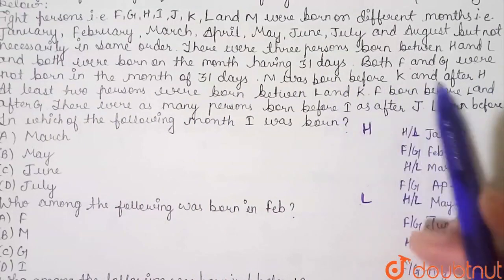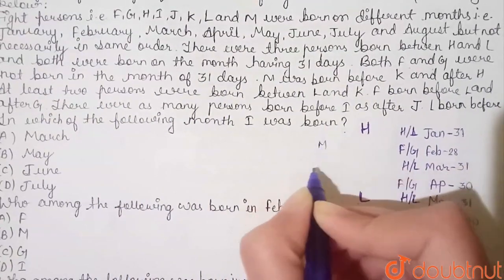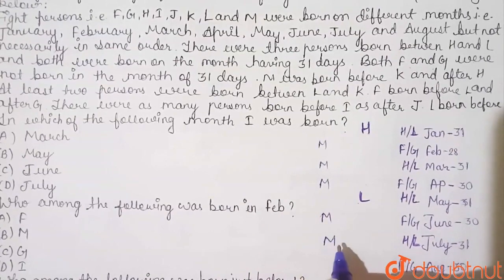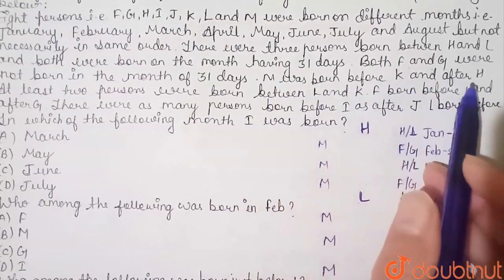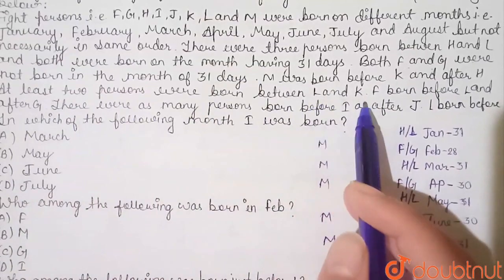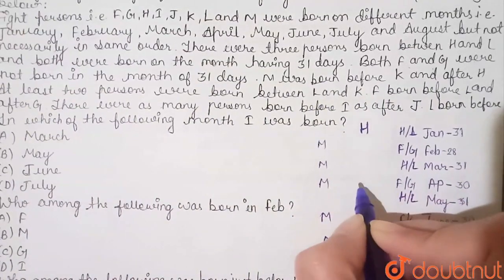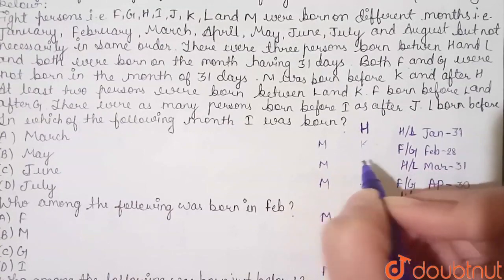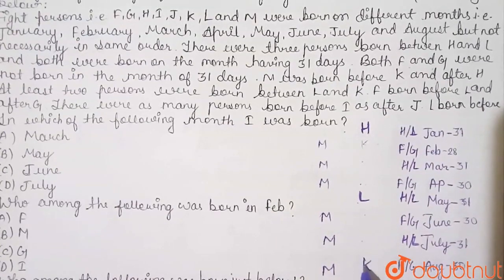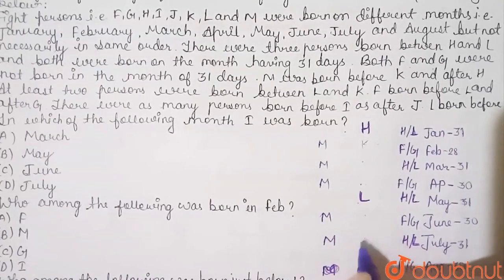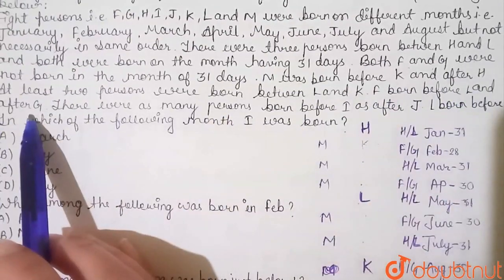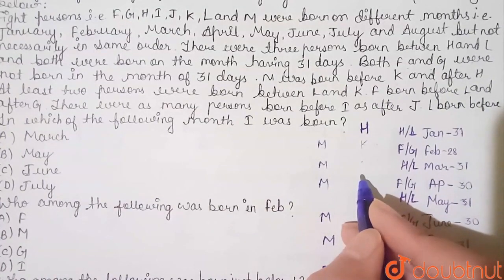M was born before K and after H. We can assume H comes in an earlier position, then 3 persons are between H and L, so L follows. M is placed between H and K. If K is at the last position, M fits in one of the three positions before K. F is born before L and after G, so G comes, then F, then L.